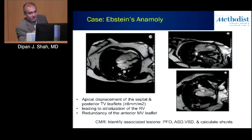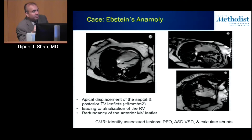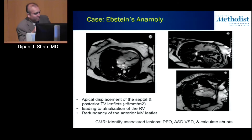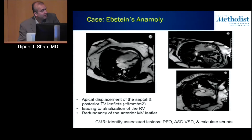Here's an example of a patient with Ebstein's anomaly, where the septal leaflet is apically displaced — the coaptation zone is much more apically displaced than normally expected. The signal void from tricuspid regurgitation is visible. For these patients it's important not only to identify TR severity, but also to look for associated abnormalities such as PFOs, ASDs, and VSDs, and to calculate shunts if any associated anomalies are present.